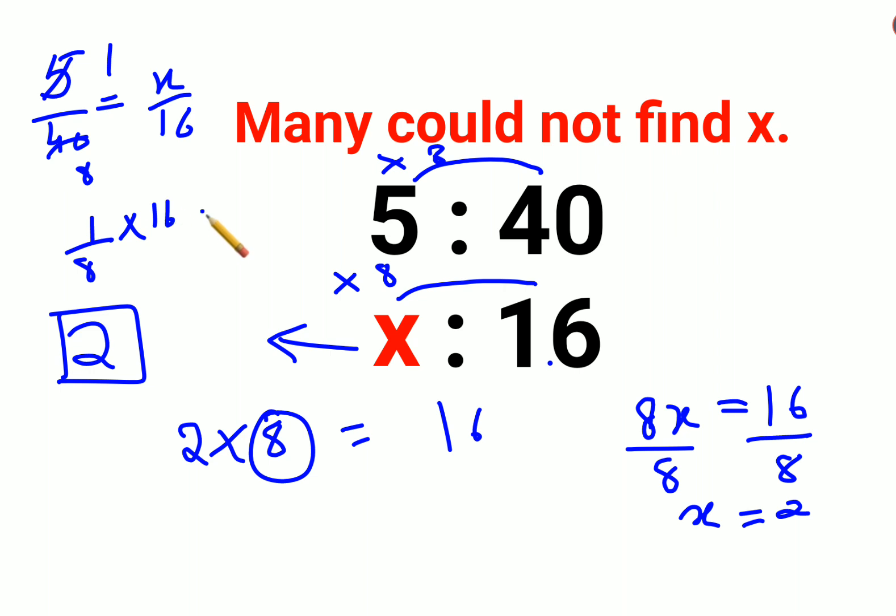So you get the value of x—this is 1 and 2—so again you get the value of x as 2. Either way, whatever works for you, both ways are completely okay.